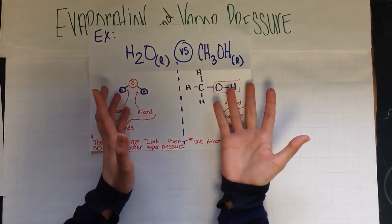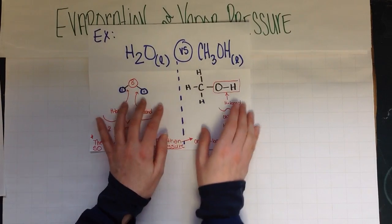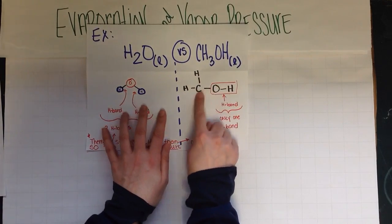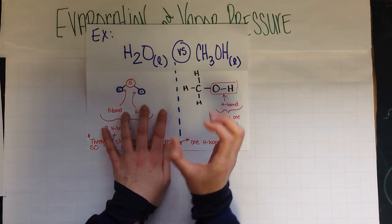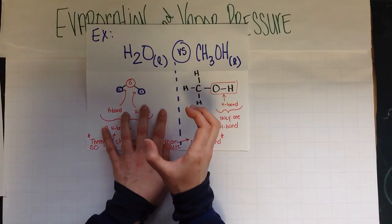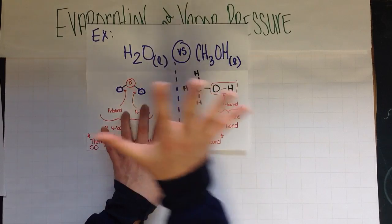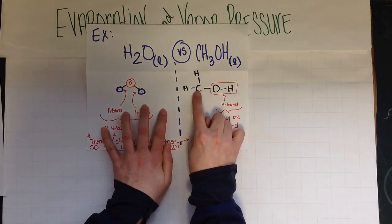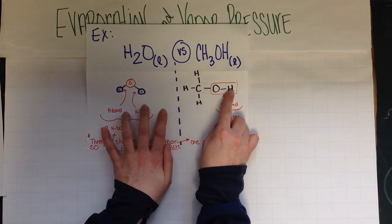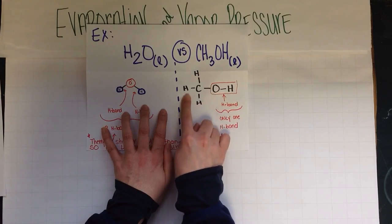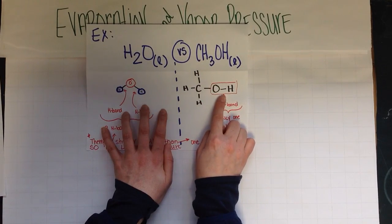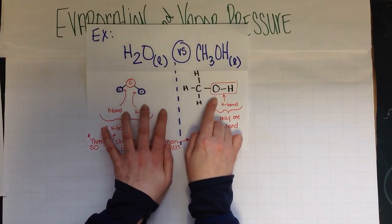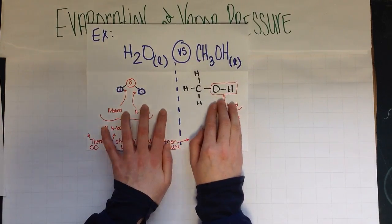Up until now you probably didn't know how to draw methanol, so it's important to draw it and take a look at it. It's carbon with hydrogens centered around it — you always want to put carbon in the center and surround it with hydrogens. Then it's bonded to an oxygen that's bonded to a hydrogen. You might want to practice writing methanol — it's a good example. Now that you know what they look like, you can find...